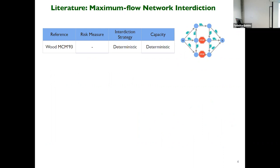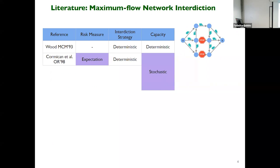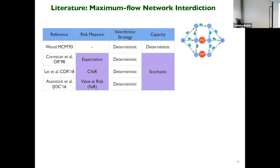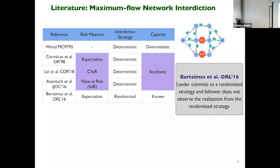The first simplest case is to consider that the capacity of the arcs in the networks are deterministic and the interdictor uses a deterministic strategy. One can consider stochastic capacity — that is, assume a distribution for the capacities of the arcs, assume the interdiction strategy to be deterministic, and consider different risk measures such as expectation, conditional value at risk, or value at risk. Recently, Bertsimas and others considered that the capacities are known but the interdictor uses a randomized strategy. This is a classical Stackelberg game setup where the leader commits to a randomized strategy and the follower does not observe the realization, and you find the best optimal randomized strategy.